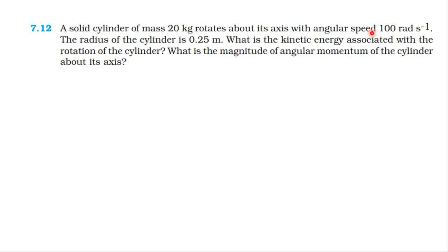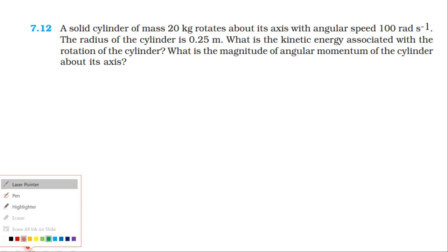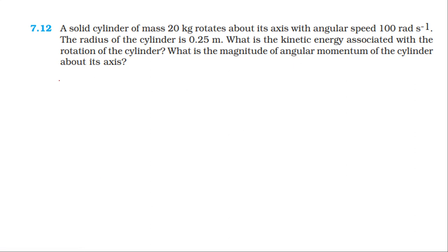So we have a solid cylinder of mass 20 kg, angular velocity 100 radian per second, and the radius of the cylinder is 0.25 m, which means 1 by 4 m. We need to find the kinetic energy and the angular momentum.